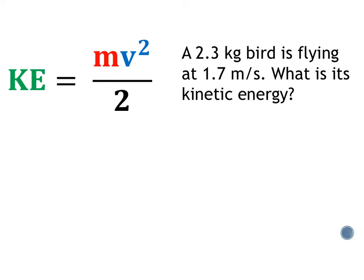So as we read, a 2.3 kilogram bird, so we know that that's our mass, is flying at 1.7 meters per second. We know that that's our velocity, and then ultimately we're looking for kinetic energy.